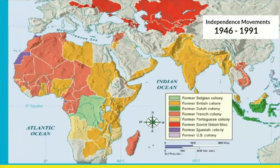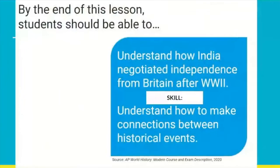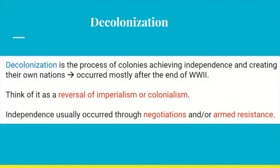To understand how this unfolded, we need to zoom into the actions to reveal complexity - it was not simple at all. By the end of this lesson, you'll understand how India negotiated independence from Britain after World War II. The skill is to make connections between historical events.